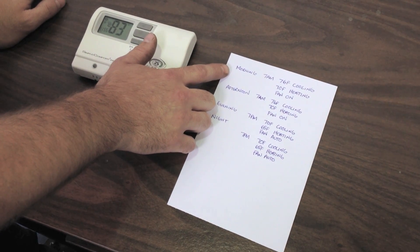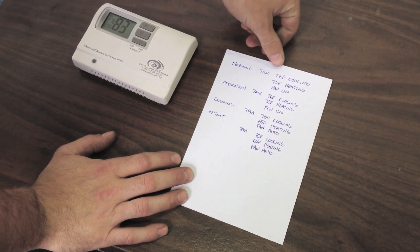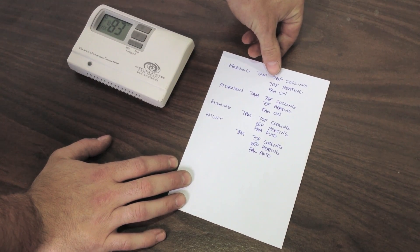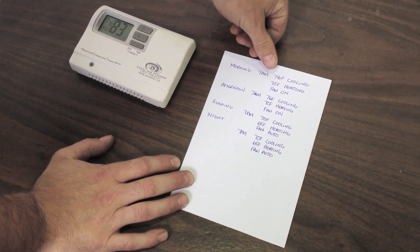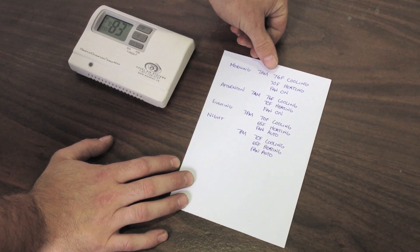So, we've started off in our morning and added 7 a.m. for our time. We have set our cooling point to 76 degrees Fahrenheit, our heating point to 70 degrees Fahrenheit, with our fan on all day, so it will not cycle off when the cooling or heating is shut off.